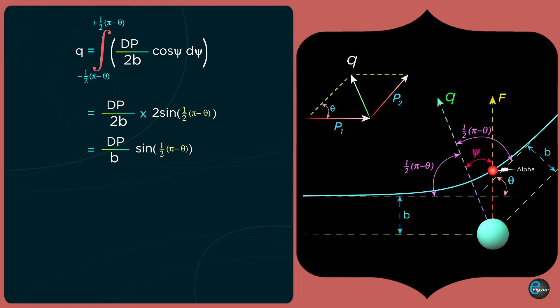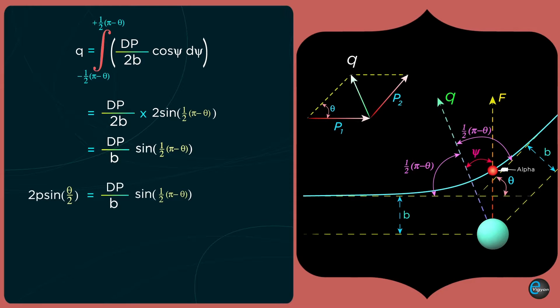We already calculated q = 2p·sin(θ/2). So from the above equation: 2p·sin(θ/2) = (dp/b)·cos(θ/2), which gives tan(θ/2) = d / (2b). This is the relation between the scattering angle θ and impact parameter b. Here, d is the distance of closest approach, calculated from d = Ze² / (2πε₀T), where T is the initial kinetic energy of the alpha particle.